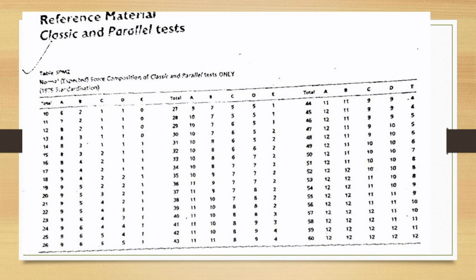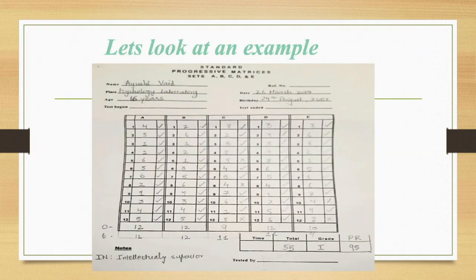Now we will open up the expected score table in the manual and we will track down and find out where the total score of 55 is. Now the expected breakup of 55 is 12, 12, 11, 11, 9. We shall write this on the answer sheet now. We will write the expected scores next to the scores that our subject got in various sets.